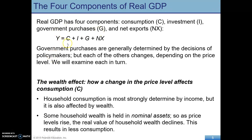We've looked at this equation before when examining the components of GDP. Total output — real GDP — is comprised of consumption, investment, government spending, and net exports. If that's unfamiliar, go back and review it because we're building on it here. So why does the aggregate demand curve slope downward? We're going to look at each of these components in turn and how they affect aggregate demand — that's what we're thinking about: building aggregate demand.